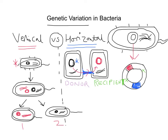So now we have passed on that genetic information horizontally — from one bacterial cell to another in the same generation. And that ultimately is horizontal gene transmission. This conjugation tube allows for a replicated plasmid to pass through from the donor cell into the recipient cell, so now both have that plasmid, both have that genetic information. It's a very efficient way for bacteria to pass on such a variation.